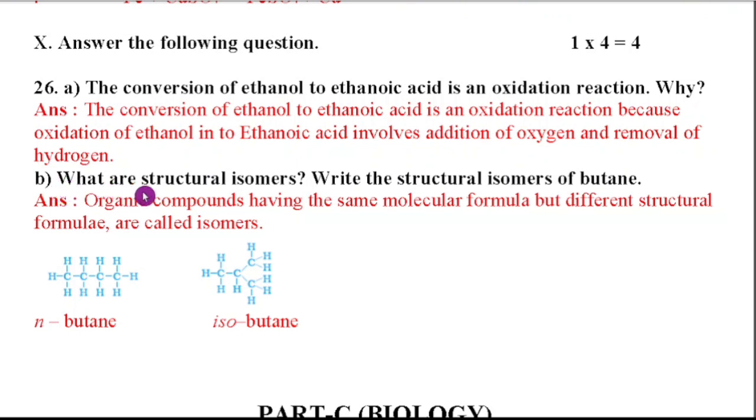Second question. What are structural isomers? Write the structural isomers of butane. So structural isomerism means organic compounds having the same molecular formula but different structural formula. It is called isomerism. So here they have given n-butane and isobutane. Butane means we know that C4H10. The molecular formula is C4H10. Isobutane means it is also having same molecular formula but different structural formula. So this is the example.